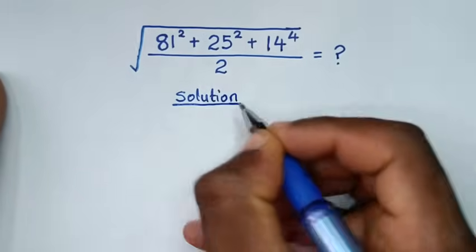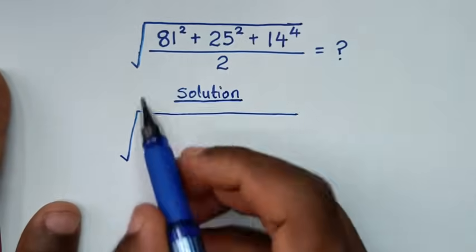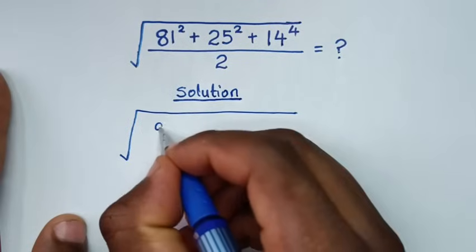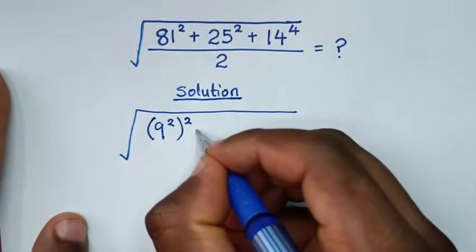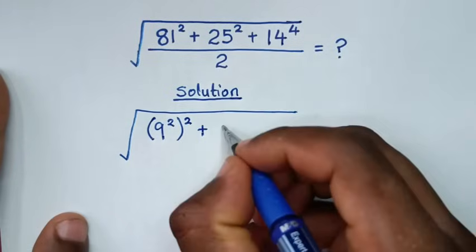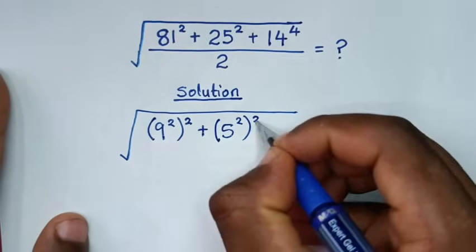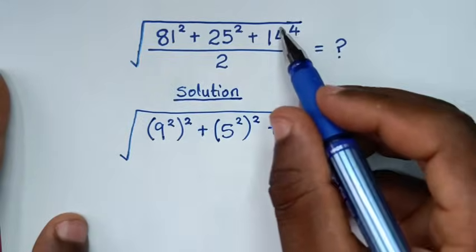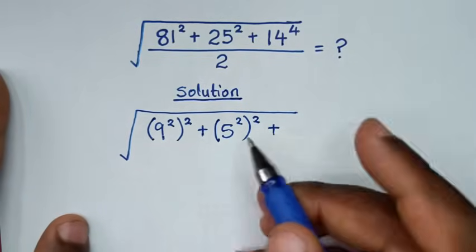From our problem, which is square root of 81 squared — 81 is the same as 9 squared, so bracket this to the power of 2 — plus 25 squared — 25 is the same as 5 squared — then bracket this to the power of 2, plus 14 to the power 4. From here, 9 plus 5 equals 14.